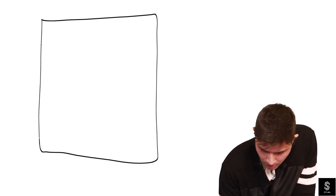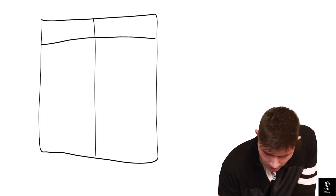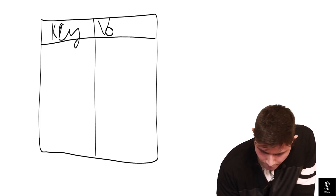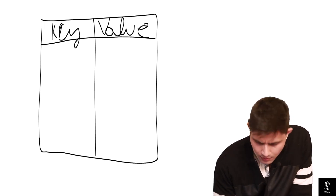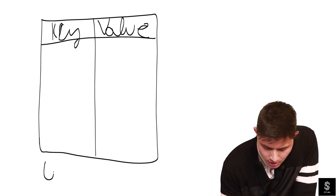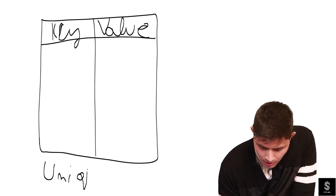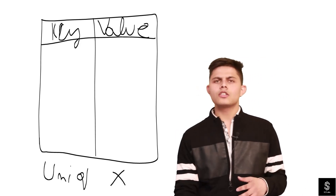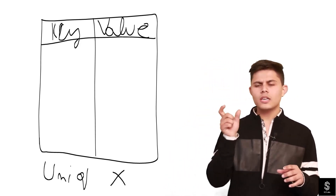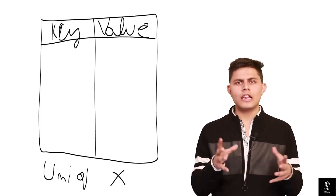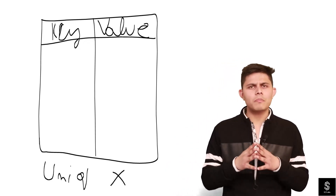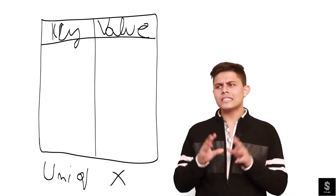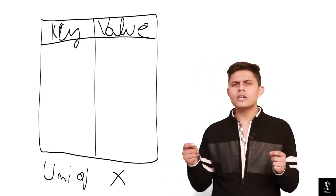In a Map, you store two things: number one is the key and number two is the value, where the key is unique and the value is not unique. So whenever you store a particular value in a Map, you store it with the key and the value. Let me take a simple example to explain it.